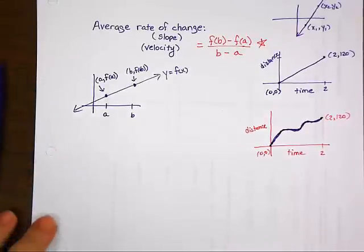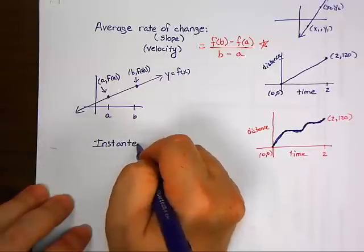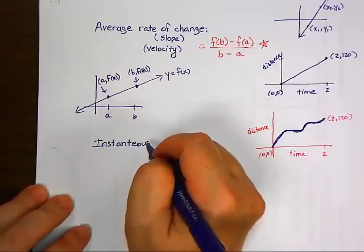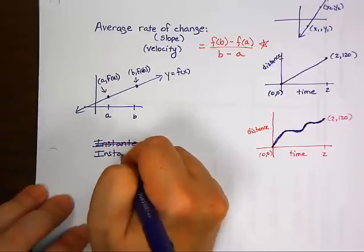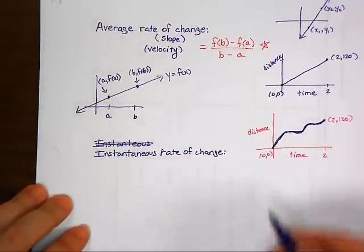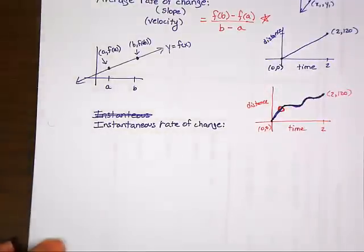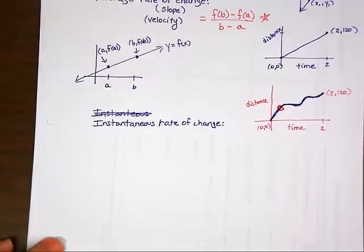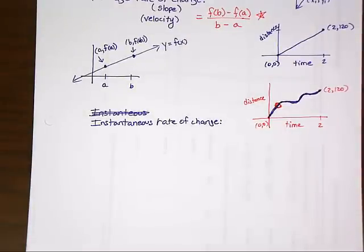The new thing we're going to start talking about today is called instantaneous rate of change. You can pretty much deduce what it means — how fast am I going right at this exact moment? We don't know what a derivative is yet, so we can't go there. Rate of change means slope, so the question is: I want to know the slope right there at a single point.